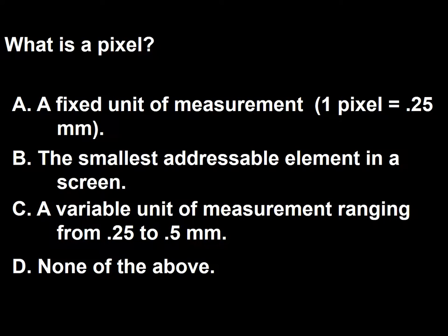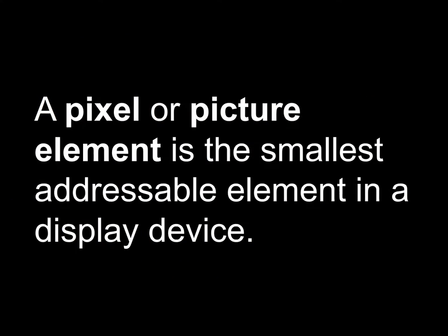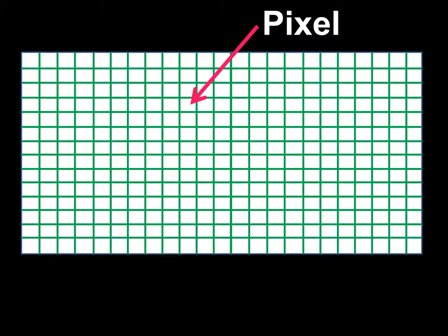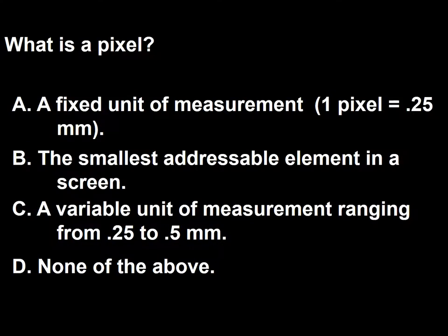Next question: What is a pixel? A, a fixed unit of measurement where one pixel equals 0.25 millimeters; B, the smallest addressable element in a screen; C, a variable unit of measurement ranging from 0.25 to 5 millimeters; D, none of the above. A pixel, or picture element, is the smallest addressable element in a display device. We can think of pixels as geometrical figures, usually square, of variable size. So the answer to this question is B.